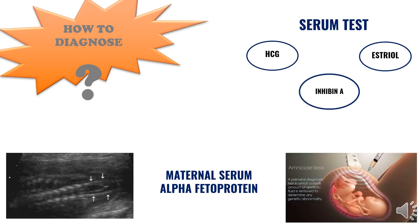For diagnosis of myelomeningocele, this is often done prenatally using the test maternal serum alpha-fetoprotein. In spina bifida, alpha-fetoprotein is increased in the mother's serum. It can be increased in other conditions like Down syndrome, but not more than in spina bifida.